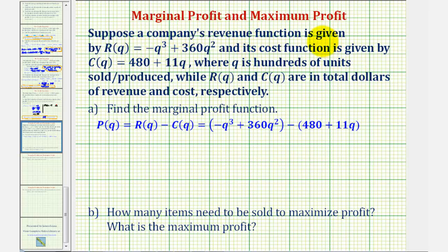Suppose a company's revenue function is given by r of q and its cost function is given by c of q, where q is hundreds of units sold and produced, and r of q and c of q are in dollars.